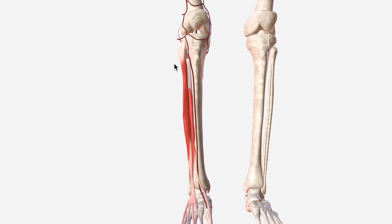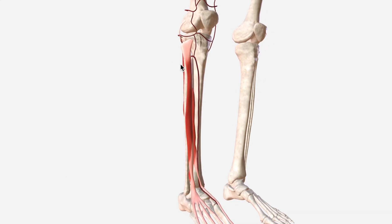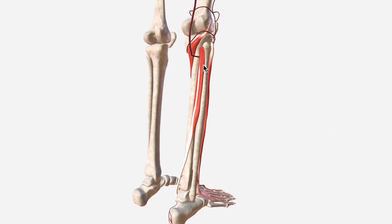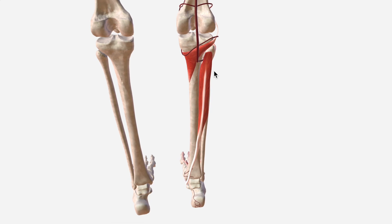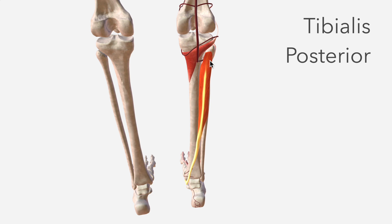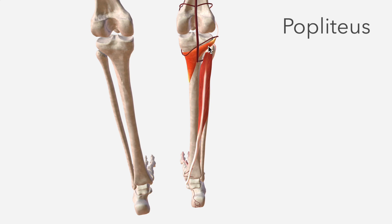Curving around to the back, we can see the anterior tibial artery at its origin, crossing between the tibialis posterior and popliteus muscles.